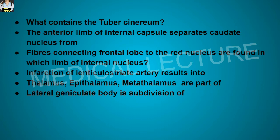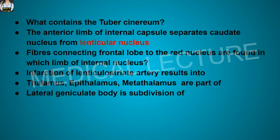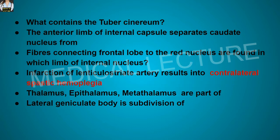The tuber cinereum contains the hypothalamus. The anterior limb of the internal capsule separates the caudate nucleus from the lenticular nucleus. Fibers connecting the frontal lobe to the red nucleus are found in the posterior limb of the internal capsule. Infarction of the lenticulostriate artery results in contralateral spastic hemiplegia.